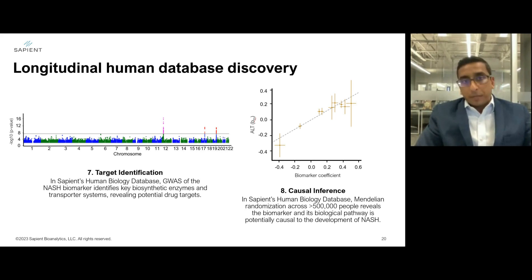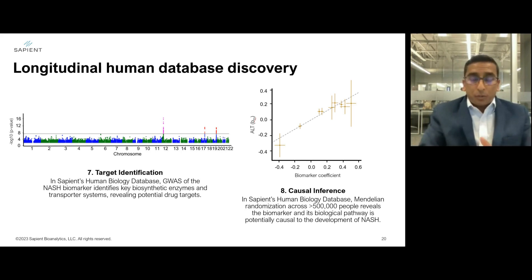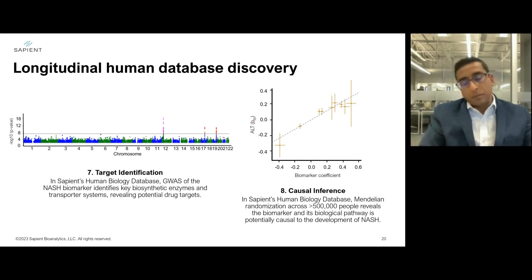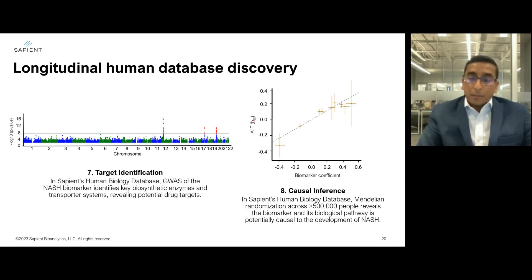We can also integrate across our human biological database, which includes over 20,000 individuals with dense genomic measures alongside these same blood biomarkers. Performing a genome-wide association study around this singular marker, we derive the Manhattan plot shown on the left. This allows us to understand the biosynthetic enzymes and transport systems that produce this marker and transport it into blood. Given where these enzymes are expressed, we can localize the production of this biomarker to the hepatocyte — and even to a specific organelle within the hepatocyte.